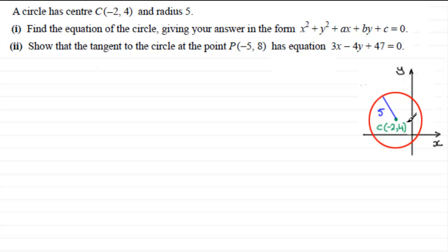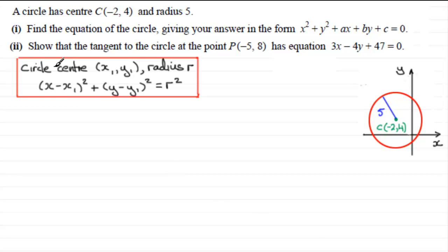Now, to find the equation of a circle, you should be familiar with the fact that a circle with a centre (x₁, y₁) and a radius r has this particular type of equation: (x - x₁)² + (y - y₁)² = r².